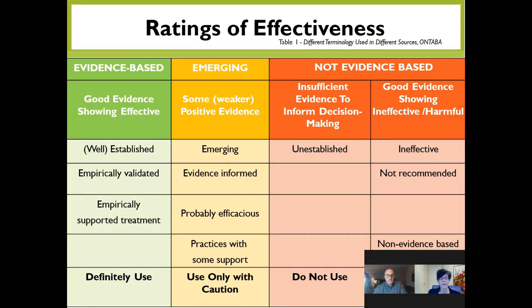There are a number of rating reports for autism treatments. Groups, universities, and associations gather all the research they can find — thousands of studies — and look at the quality of evidence, how robust the outcomes are, and whether results occur only in a lab or in community-based programs as well. They rate treatments as either research-based, evidence-based, emerging, or not evidence-based. Many rating reports use different language, but the bottom line is: if a treatment has good evidence and is shown to be very effective, clinicians are supposed to start there.